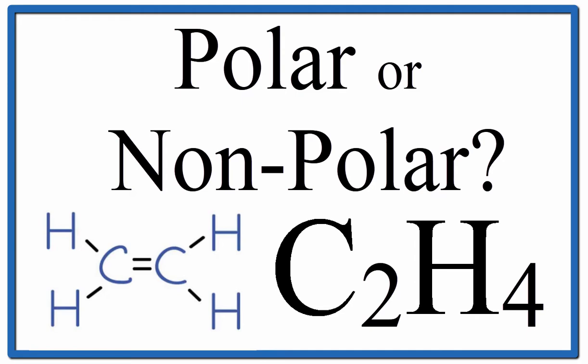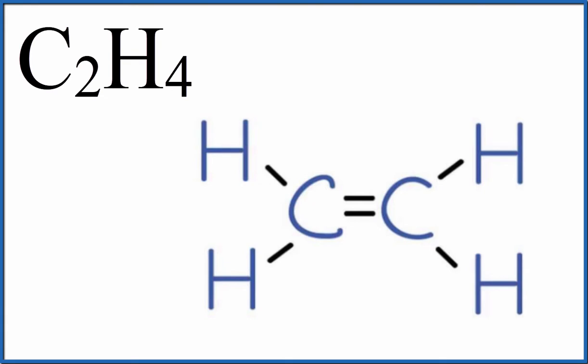We're going to start with the Lewis structure. That'll show us where the atoms and the valence electrons are distributed around the molecule. With that, we can look at shape and then figure out what the polarity is.